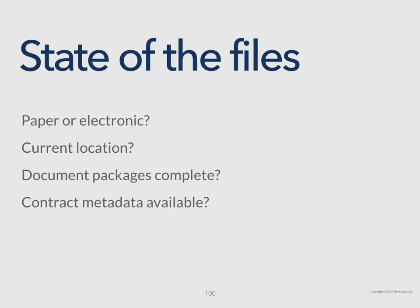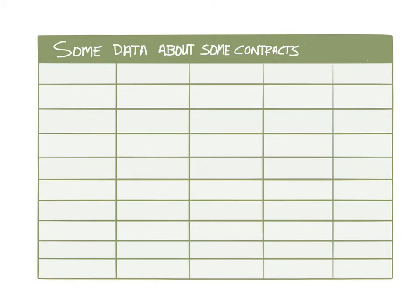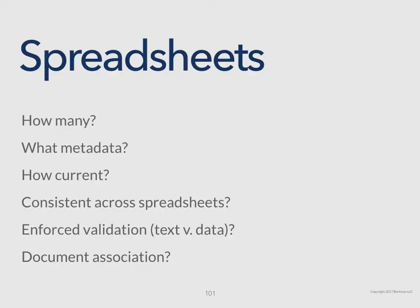What do we mean by metadata? We mean data about those contracts. It is not unusual, in addition to the state of the files, for organizations to have spreadsheets concerning their contracts. There might be many spreadsheets, or there might be a few, but you want to go find all the spreadsheets about the contracts and make sure you've got them all. How many spreadsheets are there in your organization regarding contracts? What metadata are you tracking?